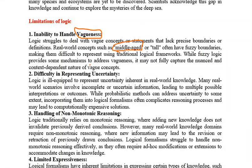Fuzzy logic provides some mechanisms to address vagueness, which I will explain in upcoming videos. Fuzzy logic has many mechanisms to handle vagueness, but it may not fully capture or completely solve the problem. Even with fuzzy logic, we still have some problems when dealing with vagueness. So this is one limitation, a disadvantage of using logic.